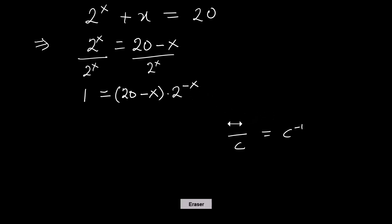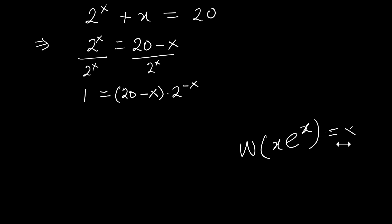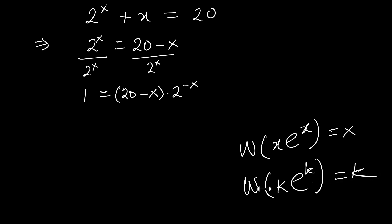To solve this type of equation, we need to apply the Lambert W function. The Lambert W function satisfies: if we have W(k · e^k), the answer is k. So Lambert W of k times e raised to k equals k.